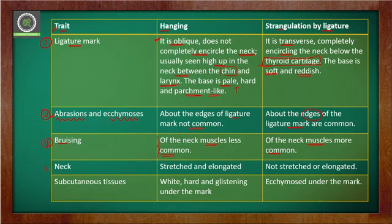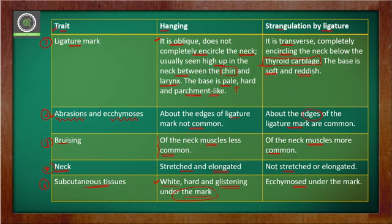The fourth point is about the neck: in hanging, the neck is stretched and elongated, whereas in ligature strangulation there is no stretching or elongation. Under the mark, in hanging we can see a hard, white, and glistening appearance of the subcutaneous tissues, while in ligature strangulation the tissue under the mark is ecchymosed.